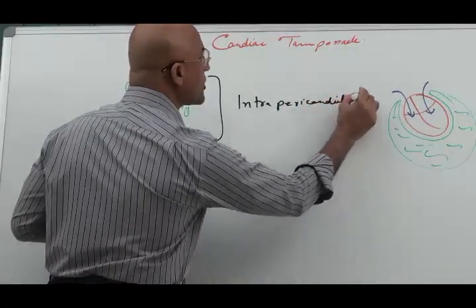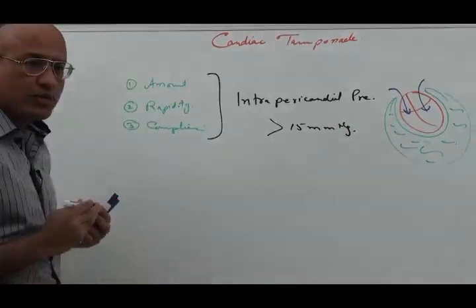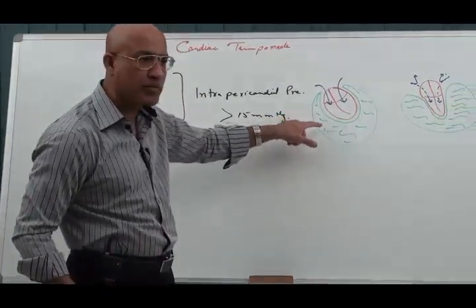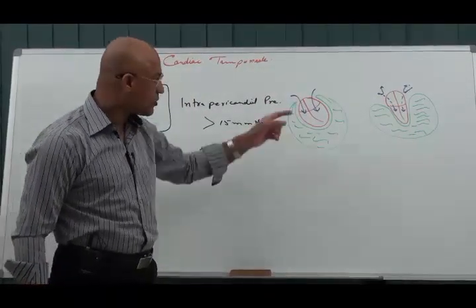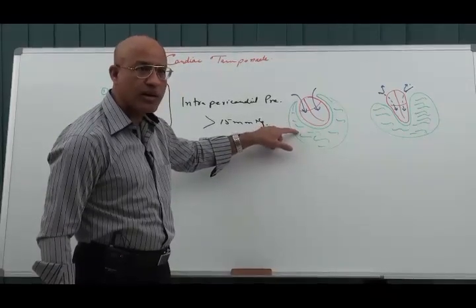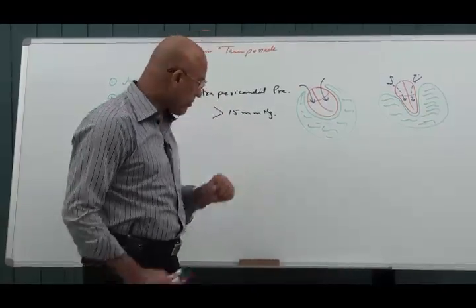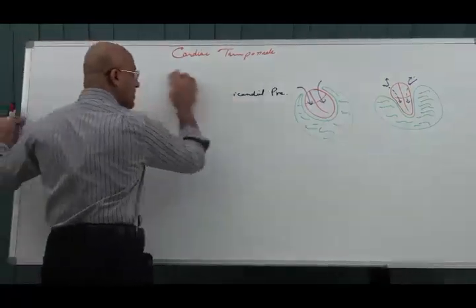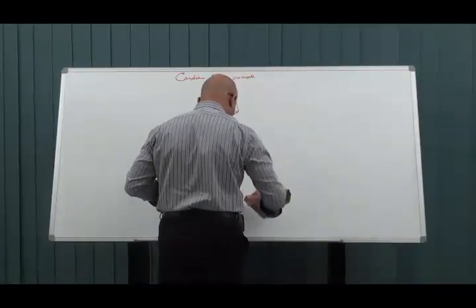What really matters is intrapericardial pressure. If it is more than 15 mmHg, it definitely leads to tamponade, because at that point the pressure exceeds the filling pressures of the ventricles and tamponade features start developing. Cardiac tamponade may be acute, subacute, or chronic, depending on the rapidity of fluid accumulation.